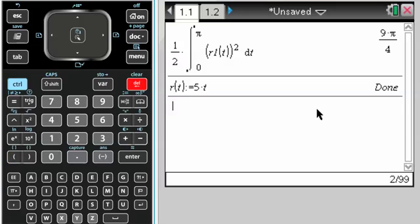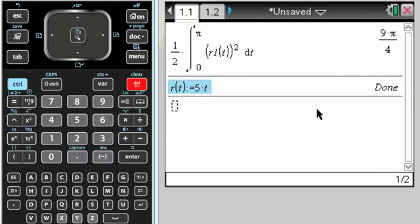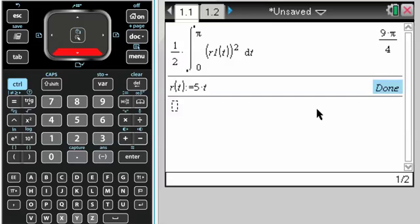So for instance, let's say r2 of t equals 5t. It's not going to say done, it's just going to repeat it. So make sure it says done. After it says done, make sure you know the minimum interval to repeat itself, and then once you know that,